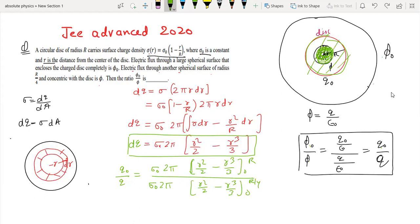The ratio q by q naught equals R squared by 2 minus R squared by 3, divided by R by 4 squared over 2 minus R by 4 cubed over 3. That's R squared by 32 minus R squared by 192.